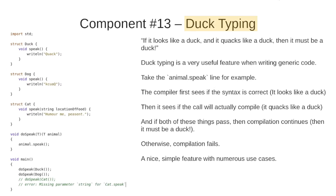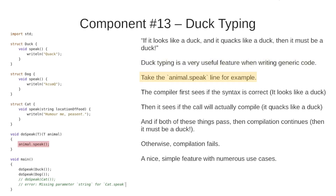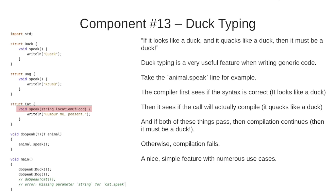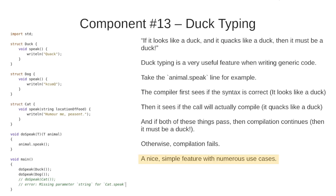Finally let's talk about duck typing. If it looks like a duck and it quacks like a duck then it must be a duck. Duck typing is very useful when writing generic code, especially paired with UFCS. Take the animal.speak line for example — the compiler first checks if the syntax is correct (can we call .speak without any parameters — does it look like a duck?), then checks the call will actually compile (it quacks like a duck). If both pass, compilation continues. Otherwise it fails — looking at the Cat struct, it has a speak function but with a parameter we don't specify, so doSpeak fails to call cat.speak. A nice simple feature with numerous use cases.